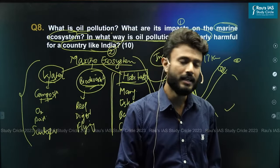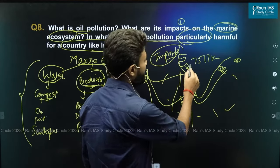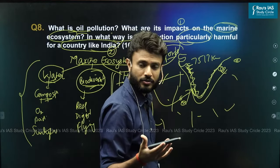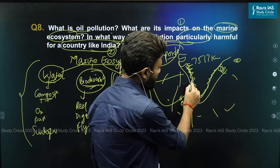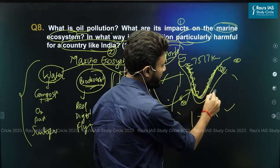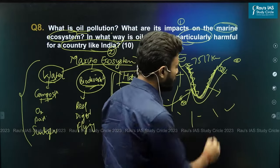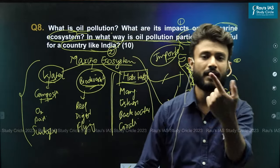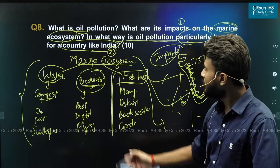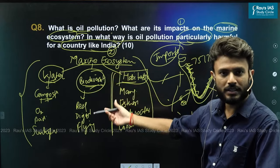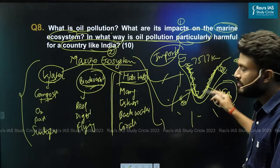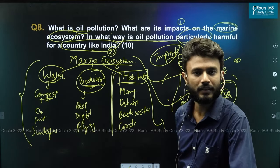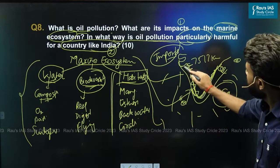India also has one of the densest coastal populations. This coastal community is directly dependent on marine fisheries for their livelihood. If oil pollution negatively impacts fish and marine species, it will directly affect the livelihood of the fishing community as well.